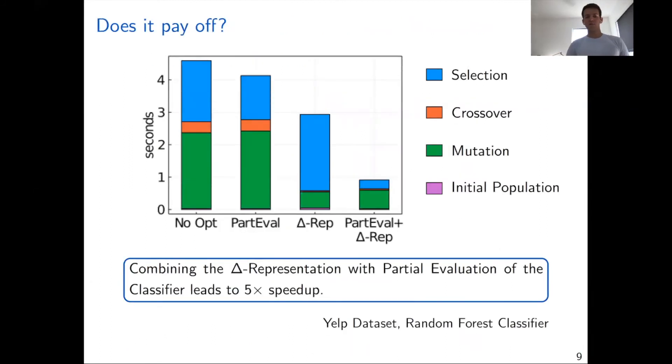Do these optimizations pay off? The answer is yes. In fact, this plot shows the runtime of Gecko with all the two optimizations enabled, then each of the two optimizations enabled separately, and then both of them together. As you can see, the two optimizations are very much complementary. They work best if they're both enabled. In this case, we see a speedup of 5x if we enable both the partial evaluation of the classifier and the delta representation in Gecko.